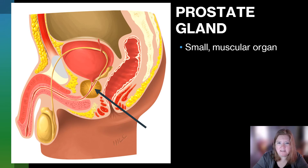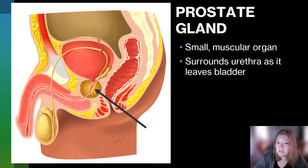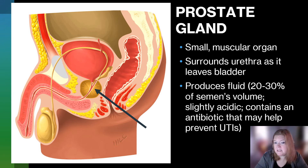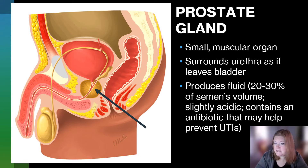We have the prostate gland. It's a small muscular organ capable of secreting substances. It surrounds the urethra as it leaves the bladder. It produces about 20 to 30 percent — mostly around 30 percent — of the fluid in semen. It's slightly acidic, but it also contains an antibiotic that may help to prevent UTIs, or urinary tract infections, in people with penises.